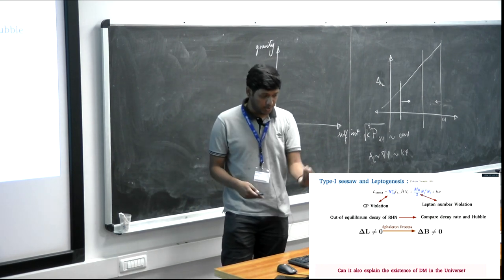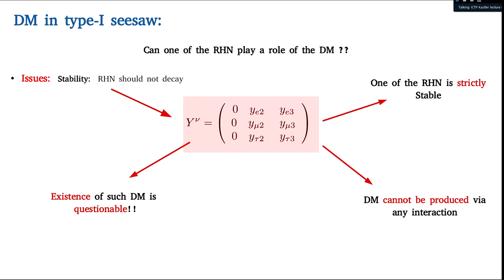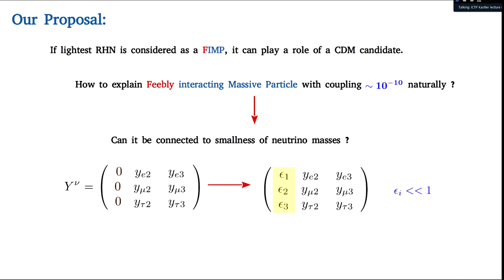We ask whether Type I seesaw can also explain dark matter — specifically, whether the lightest right-handed neutrino can be our dark matter. For stability, its interaction coupling must be very small. We propose it can be a feeble interacting massive particle with coupling of order 10^-10 or smaller. We further ask whether this small coupling can be connected naturally with the smallness of the neutrino mass.